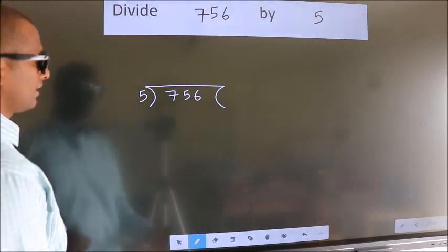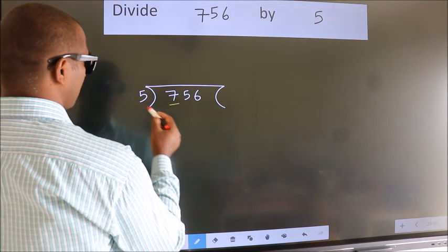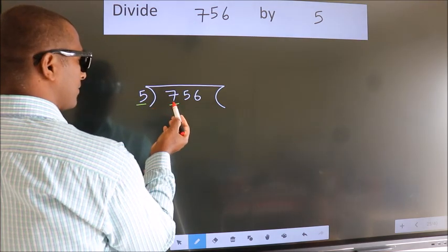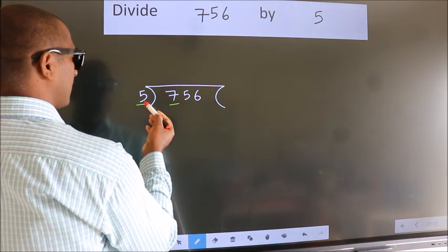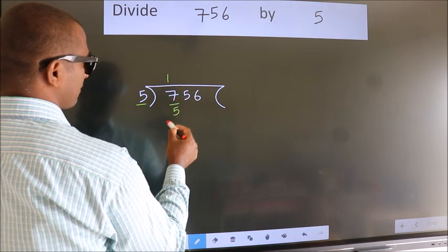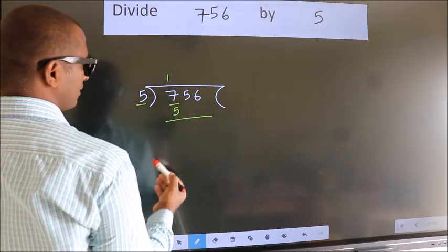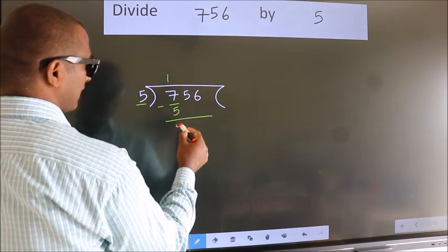Next, here we have 7, here 5. A number close to 7 in 5 table is 5 once 5. Now, we should subtract. We get 2.